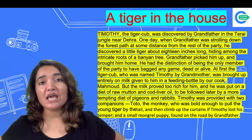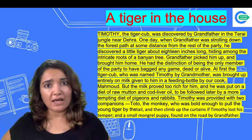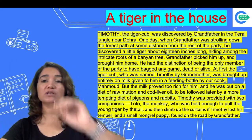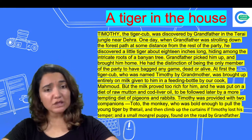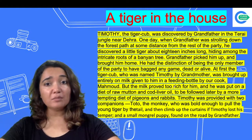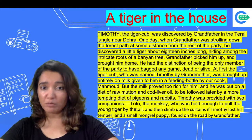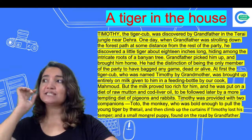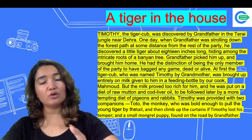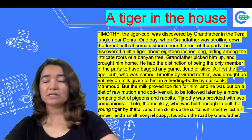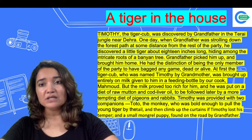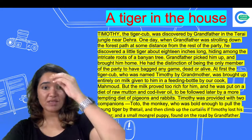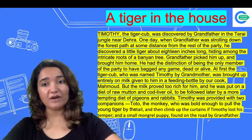So Dadaji found a tiger cub in the jungle and brought him home. His name is Timothy. When he was very small, they gave him milk in a bottle. But the milk proved too rich for him and he was put on a diet of raw mutton and cod liver oil, to be followed later by a more tempting diet of pigeons and rabbits. Timothy was also provided with two companions: Toto the monkey, who was bold enough to pull the young tiger by the tail and then climb up the curtains if Timothy lost his temper, and a small stray puppy found on the road by Grandfather.